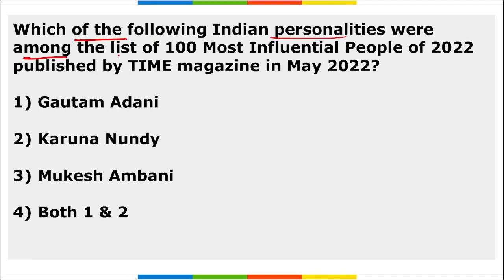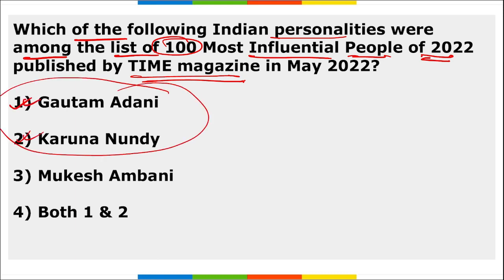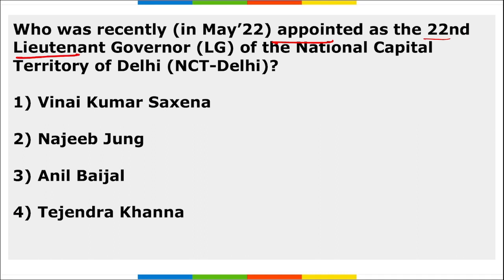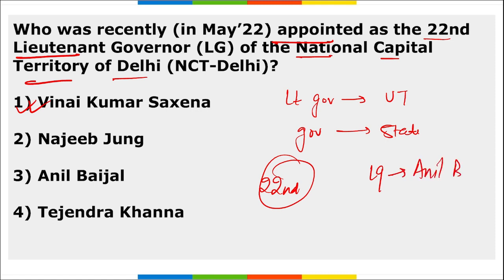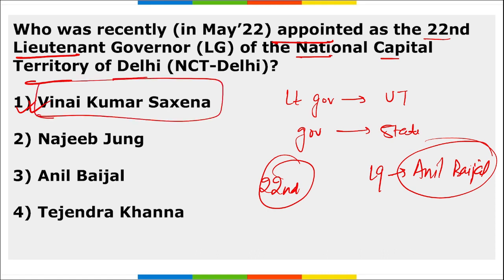Gautam Adani and Kanimozhi were among Time magazine's Top 100 Most Influential People of 2022. Vinay Kumar Saxena was appointed as the 22nd Lieutenant Governor of the National Capital Territory of Delhi, replacing Anil Baijal. Note: Lieutenant Governors are for Union Territories, while Governors are for states.